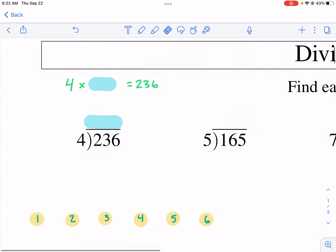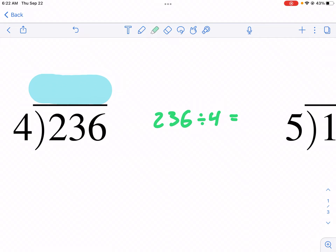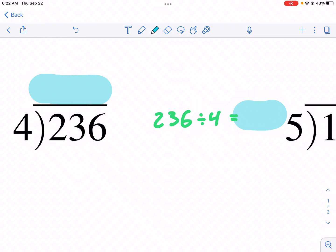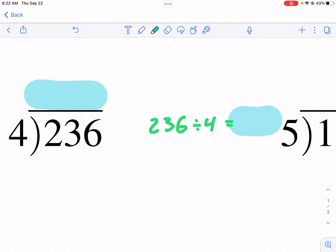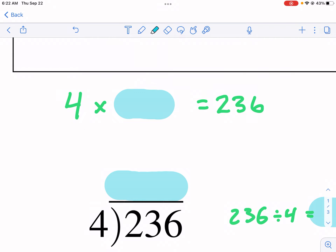So number one, we have the problem 236 divided by 4. Another way to write this is 236 divided by 4 equals, and that's going to be our quotient. So we're looking for that answer. Now, division and thinking about division is very confusing for a lot of my students. The best way to think of it is in terms of multiplication. So it's the reverse of multiplication is division. Another way to say this same problem is 4 times something equals 236, where that something is that quotient that we're talking about.